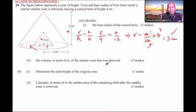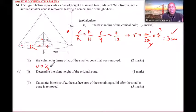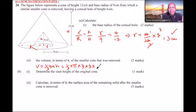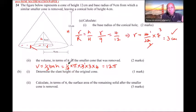Now for roman numeral two: the volume in terms of pi of the smaller cone that was removed. A cone is a form of prism, so volume equals one-third times base area times height. The base is circular, so it is pi r squared. With r equals 3 and height equals 4: volume equals one-third times pi times 3 squared times 4, which simplifies to 12 pi cubic centimeters.